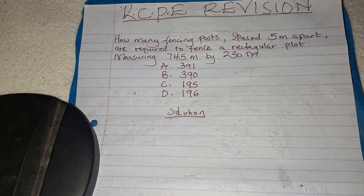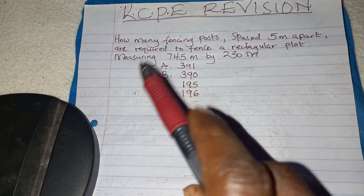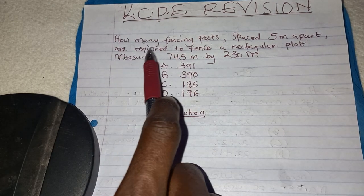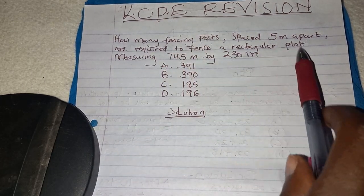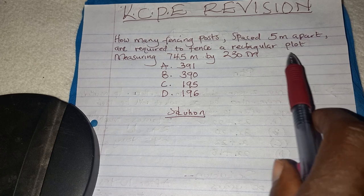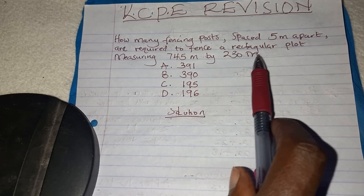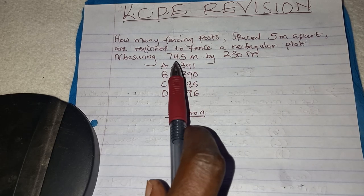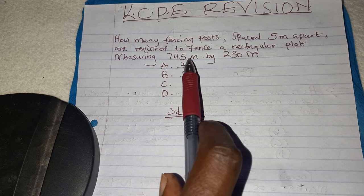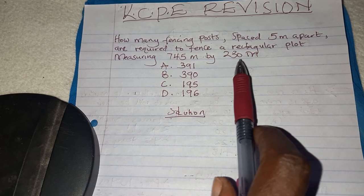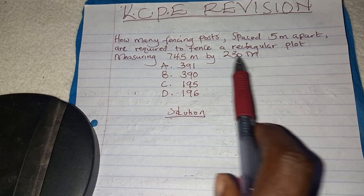Good morning candidate. Welcome to our revision today. The question says: how many fencing posts spaced 5 meters apart are required to fence a rectangular plot measuring 745 meters by 230 meters?